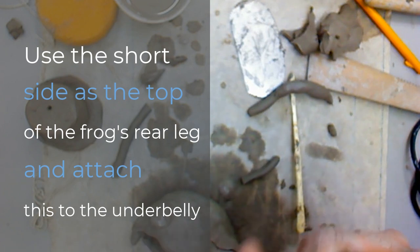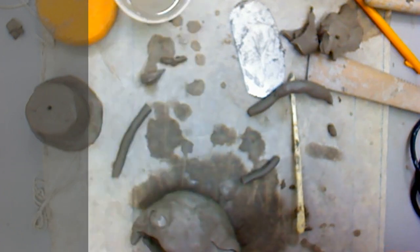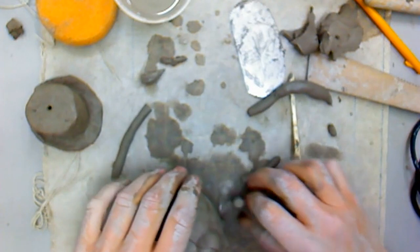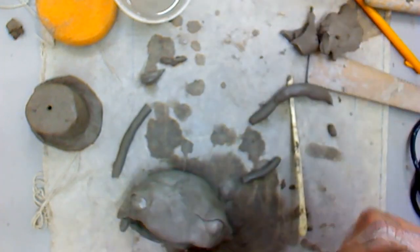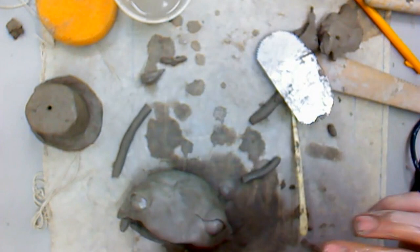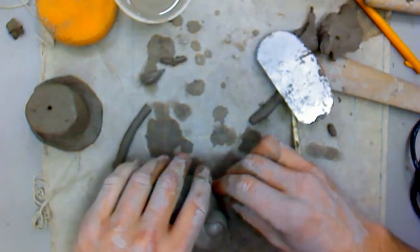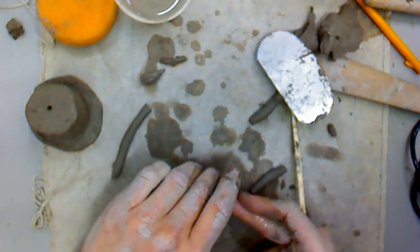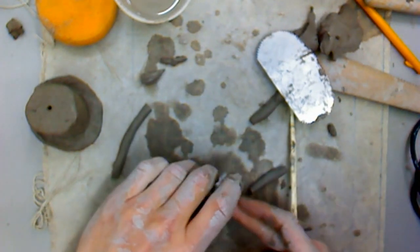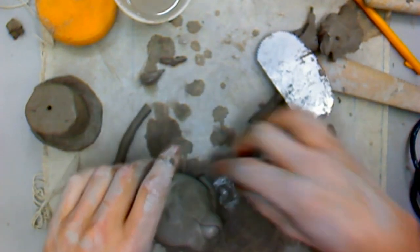We're going to use our longer pieces. We're going to put a sharp curve, more than 90 degree angle, and we're going to put that about one third of the way along the length of the coil. The short side will get attached onto our frog's belly. The long side will be the long leg of the frog.